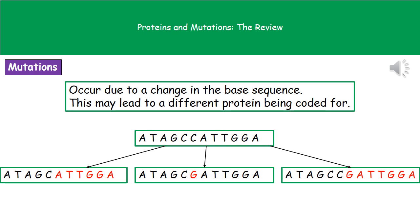The second one, in the middle there, is where all we've done is changed that C for a G — so it's just been a straight swap. Unlike our first example, this will only affect one amino acid, so the chance of it having significant changes is much lower.